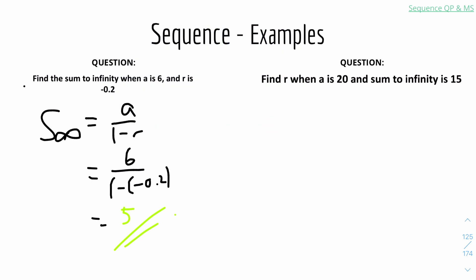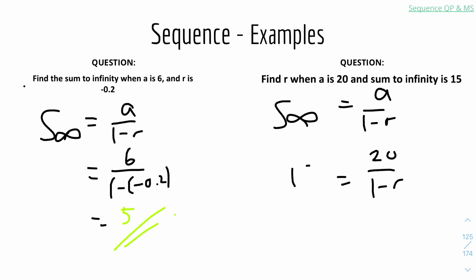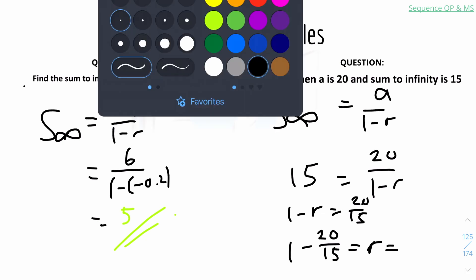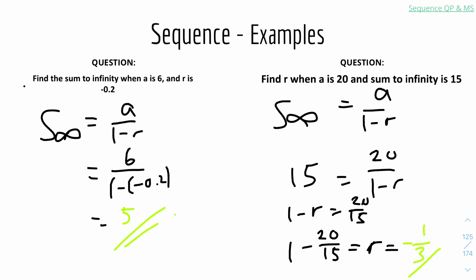Last question: find r when a equals 20 and the sum to infinity equals 15. Using the formula 15 equals 20 over (1 minus r), rearrange to get 1 minus r equals 20 over 15, so r equals 1 minus 20 over 15. Putting into the calculator gives r equals minus 1 over 3. That's the final answer.